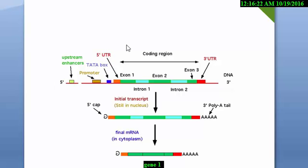Just like producing mango juice, to produce a protein we need upstream processes. What we need for production is the upstream, and the product is called downstream. In the upstream process of gene structure, that is the enhancer, TATA box, or promoter. And for the upstream process of mango juice, that is mango, sugar, and other ingredients.